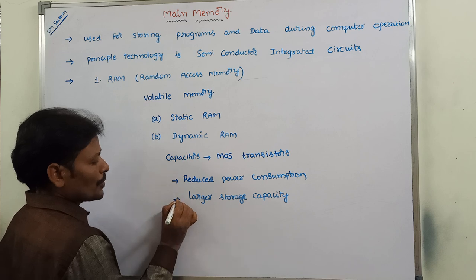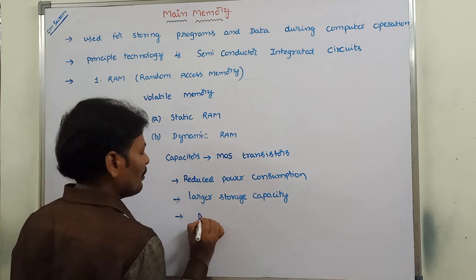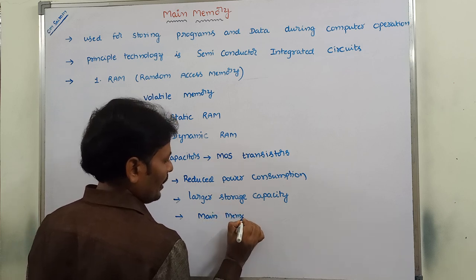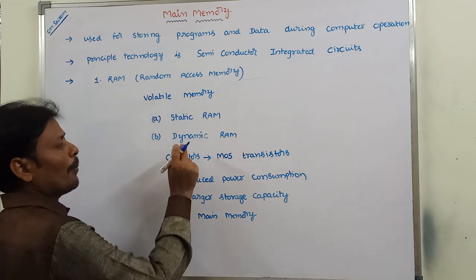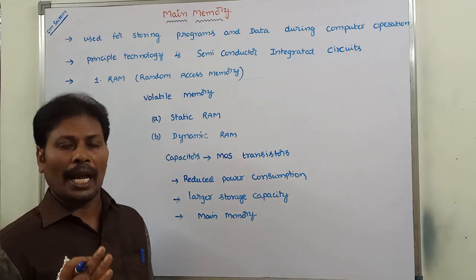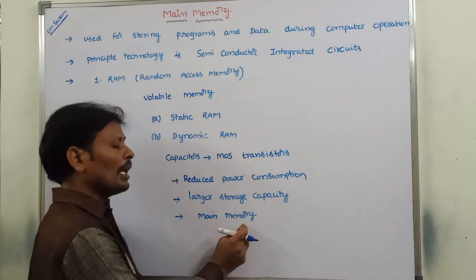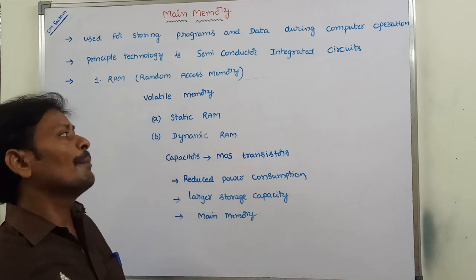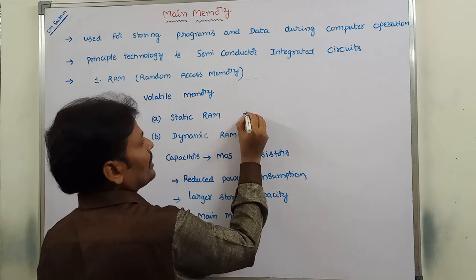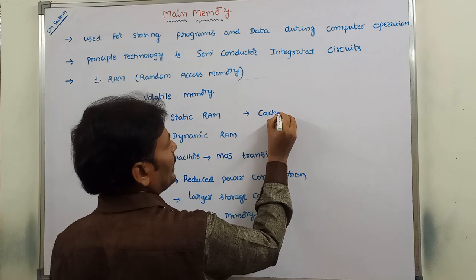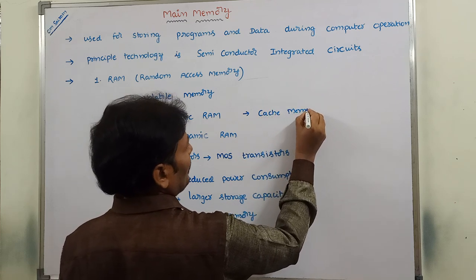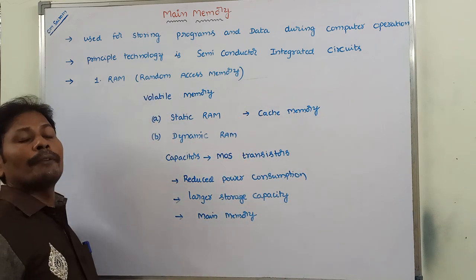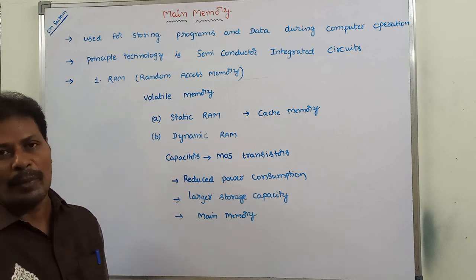Dynamic RAM is used for implementing main memory. One of the major applications of Dynamic RAM is implementing main memory, whereas Static RAM is used for implementing cache memory. These are the main differences between Static RAM and Dynamic RAM.